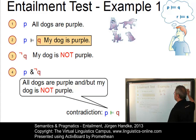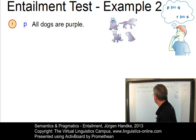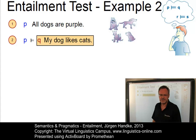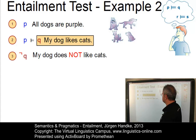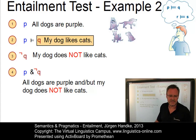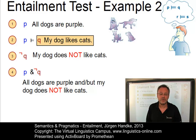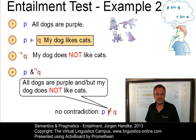Here is another example with the same proposition P: 'All dogs are purple.' This time we assume Q: 'My dog likes cats' is entailed by P. Step three: make Q negative — 'My dog does not like cats.' Step four: conjoin P and not-Q — 'All dogs are purple and my dog does not like cats,' or 'All dogs are purple but my dog does not like cats.' The result: here we do not have a contradiction at all. The fact that my dog doesn't like cats does not contradict the fact that all dogs are purple. So Q is not entailed by P.